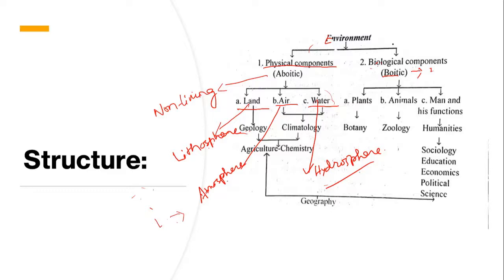For example, the geology of deserts is completely different from that of the maritime environment, and the people who live in the desert have a lifestyle completely different from the people living in the maritime environment. That is how these physical components influence us.